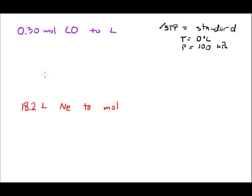So let's take a look at this calculation. We're starting out with 0.30 moles of carbon monoxide, and we're going to convert that to volume in liters. So we want to go from moles of carbon monoxide to liters of carbon monoxide.